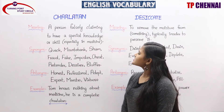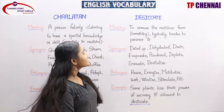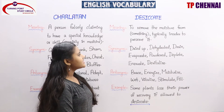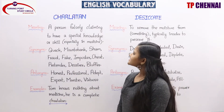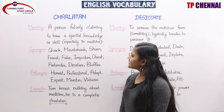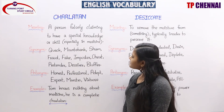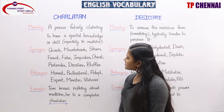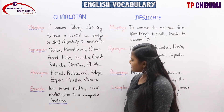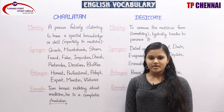Charlatan: a person falsely claiming to have special knowledge or skill, especially in medicine. Synonyms: quack, mountebank, sham, fraud, fake, imposter, cheat, pretender, deceiver, bluffer. All these words can be related to synonyms.